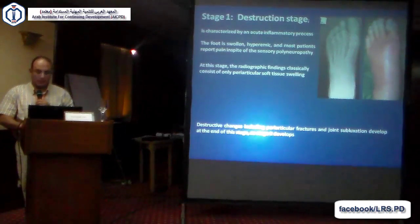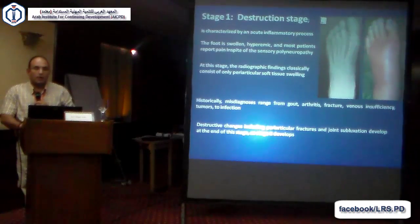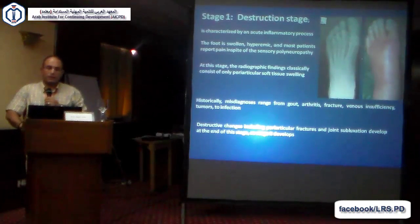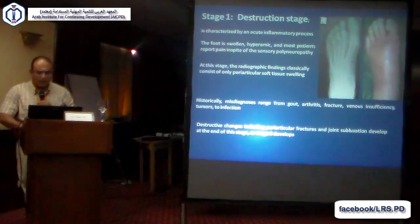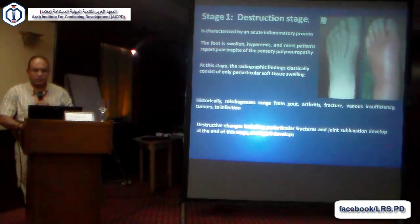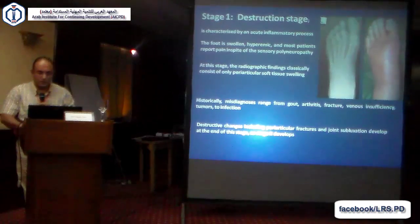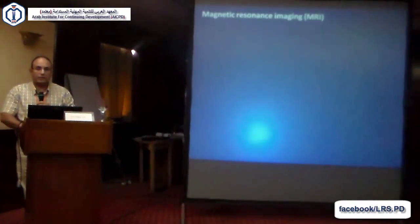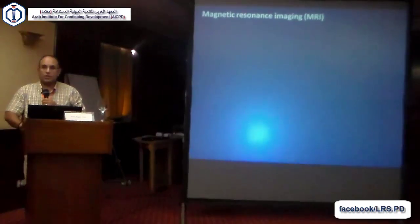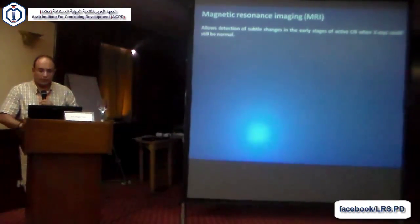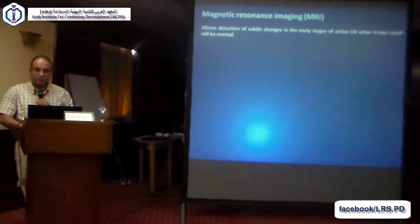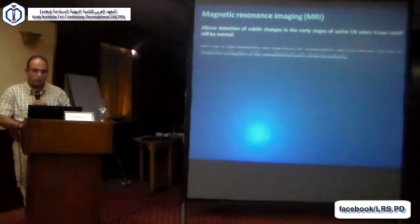The differential diagnosis at stage 1 includes gout, arthritis, fractures, venous insufficiency, tumors, and infection. Magnetic resonance imaging is very important at that stage, and it is a keystone for the diagnosis of patients in stage 1.